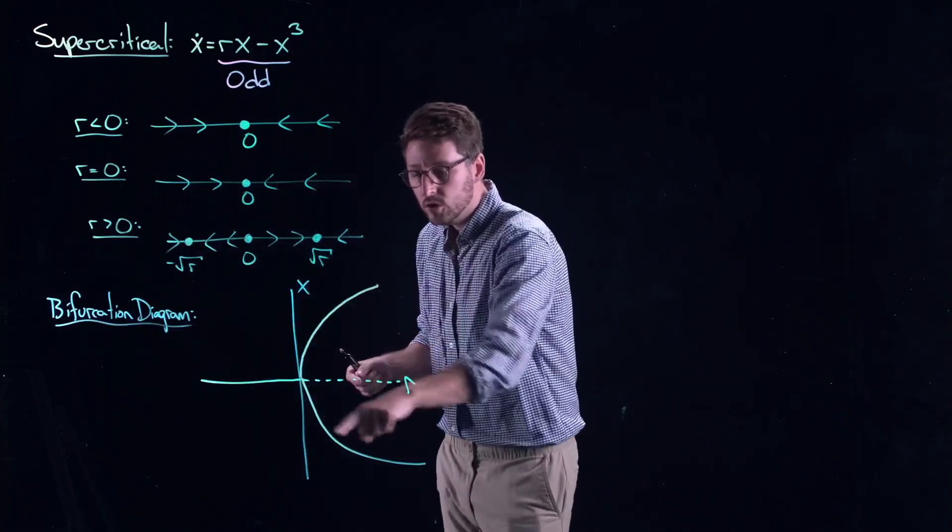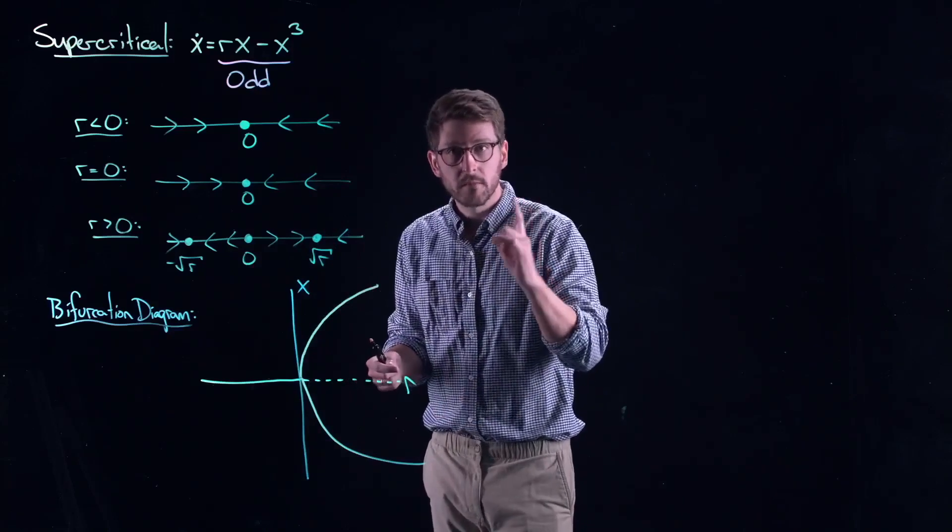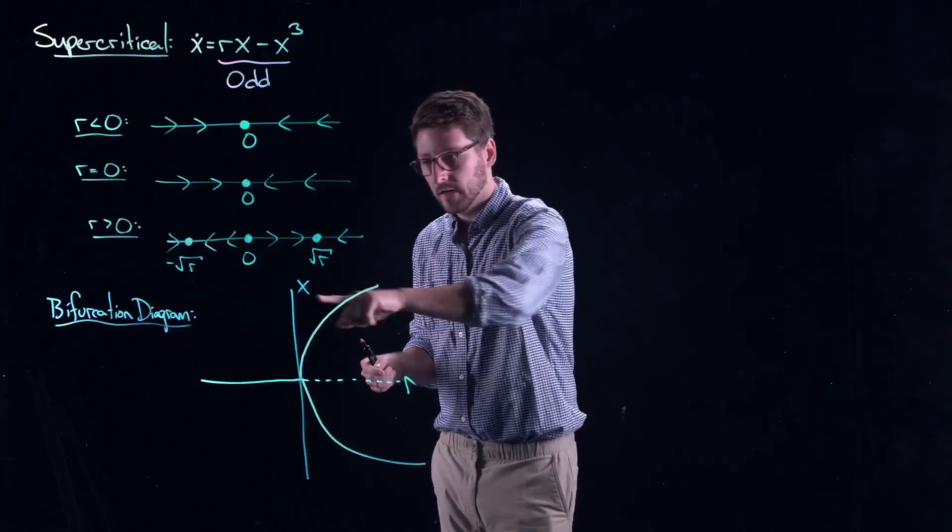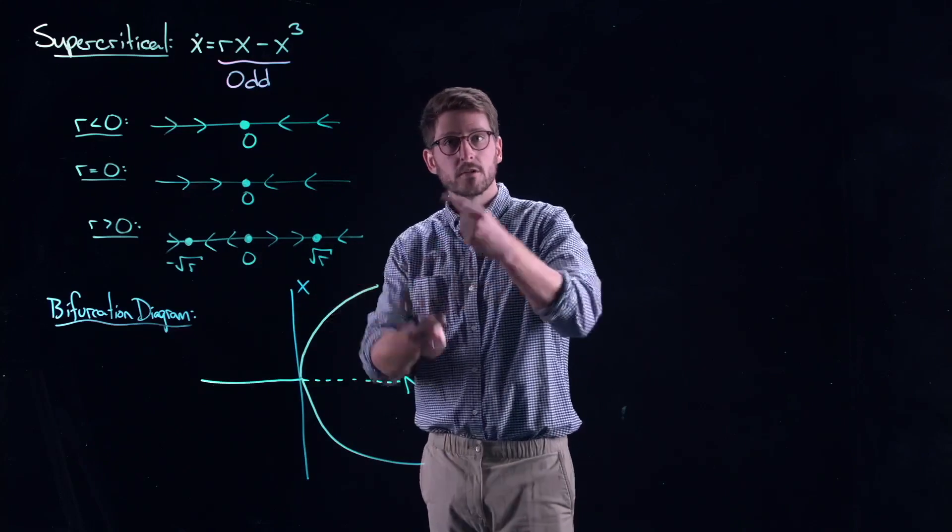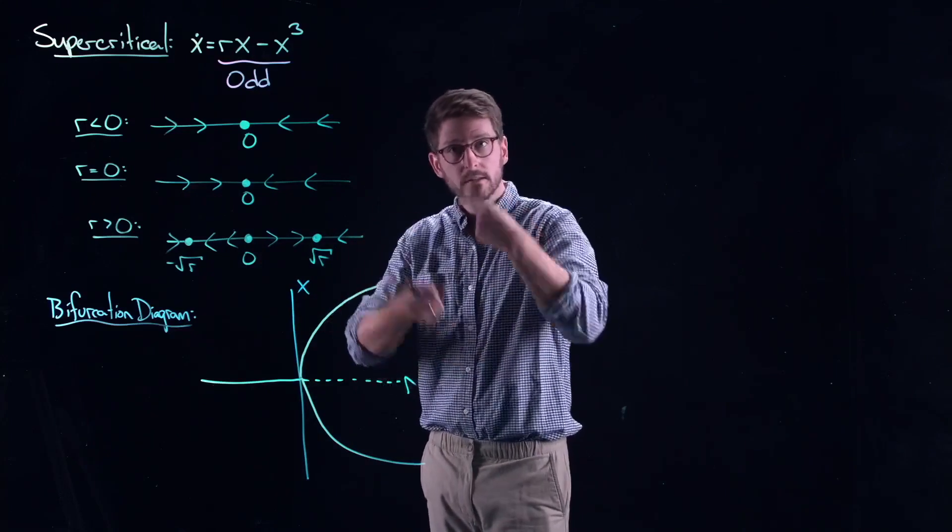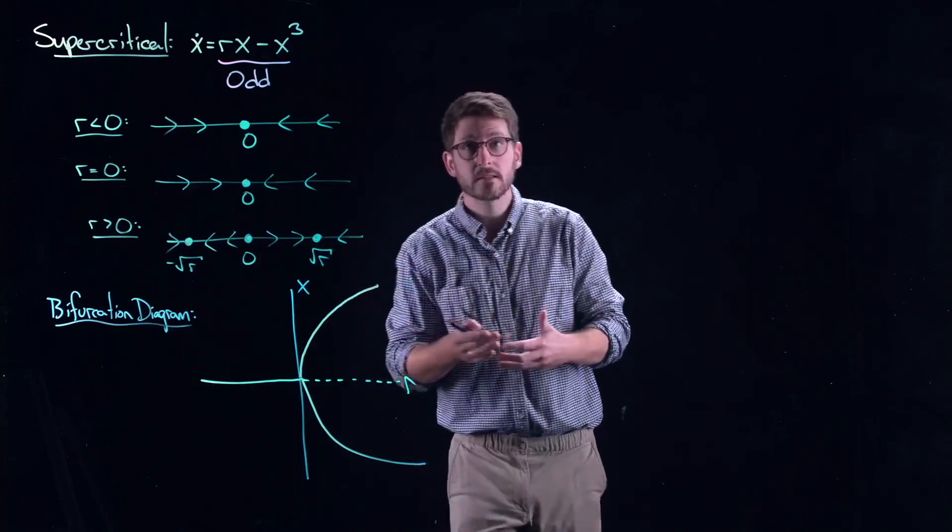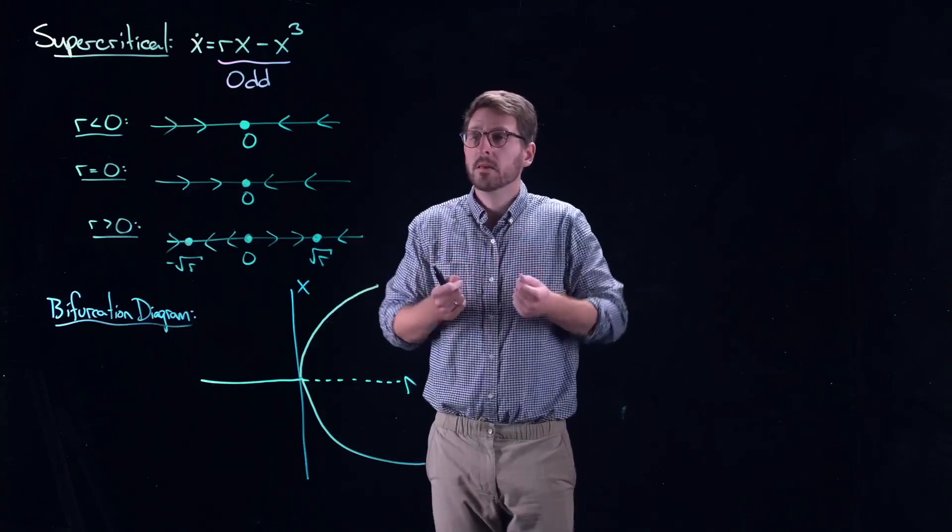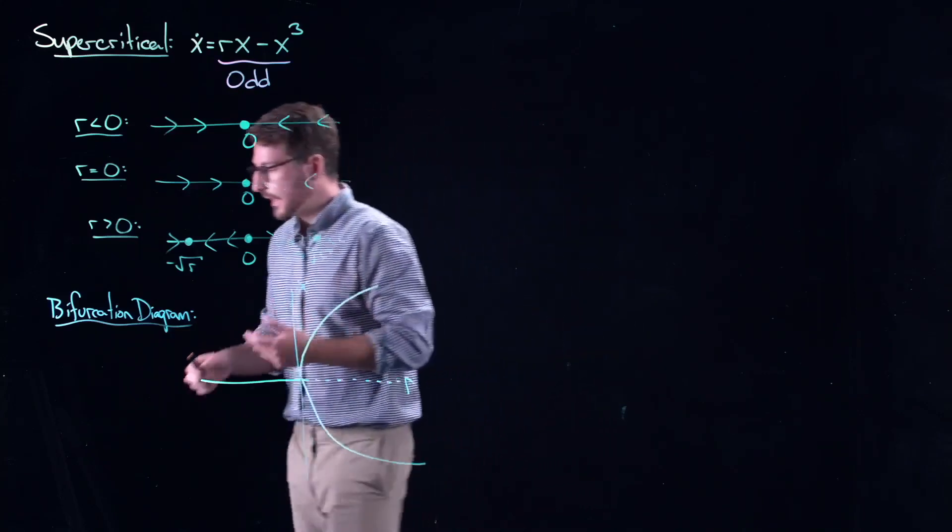The beautiful part here is that you have two stable fixed points that emerge. And they are symmetrically related. The odd symmetry of x means you can flip over the r axis here. And everything remains invariant. So, let's take a look at an example.